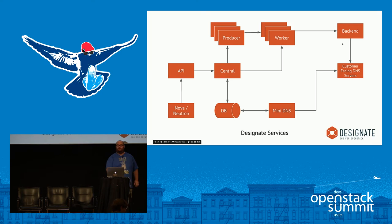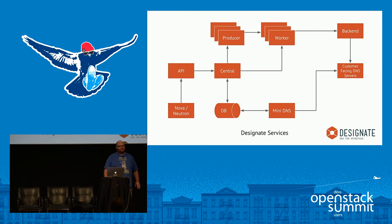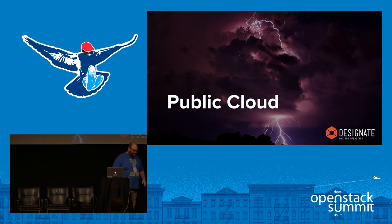The backend section is pluggable and plugs into the workers for controlling DNS information on the servers. We also run a mini DNS service which sends zone transfer information to the customer-facing DNS servers. It's not supposed to be hit by customers — it's a small Python DNS service designed for one thing only. For the public cloud use case, Tim Simmons from Rackspace will talk about it.